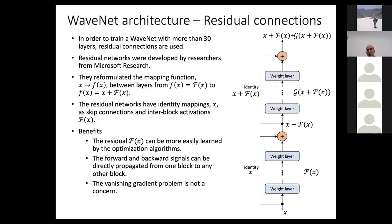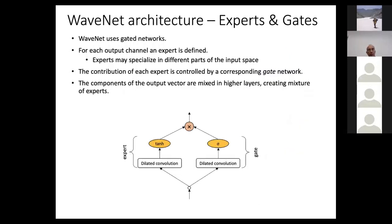Another important WaveNet component is the expert-gate construct, which has similarities to gates in LSTMs and GRUs but is a simplified version with only two gates. The expert learns a part of the hidden space, and the gate evaluates how relevant that information is, multiplying with the expert to either pass or block information to subsequent layers.